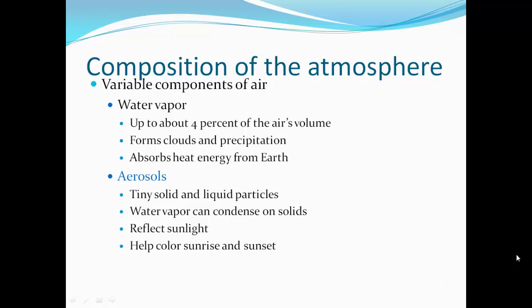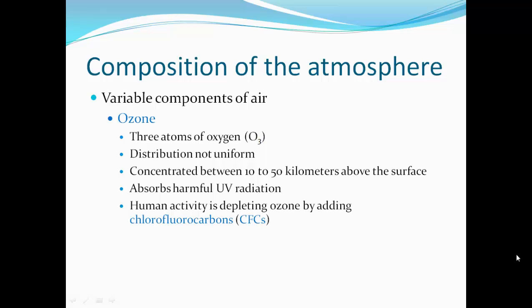Variable components of the air include water vapor, which is up to 4% of the air's volume. It forms clouds and precipitation and absorbs heat and energy from the earth. Then aerosols, or tiny solid and liquid particles — water vapor can condense on these solids, reflect sunlight, and help color sunrise and sunset.